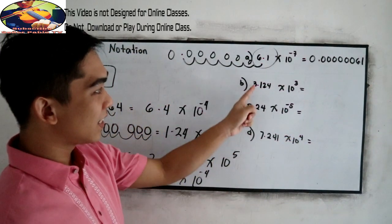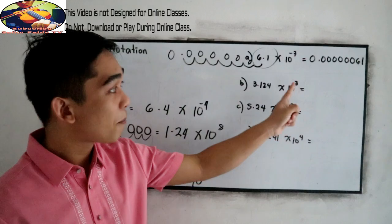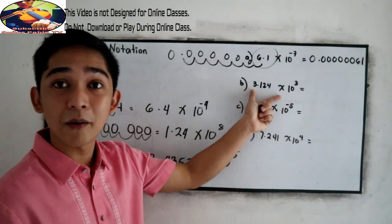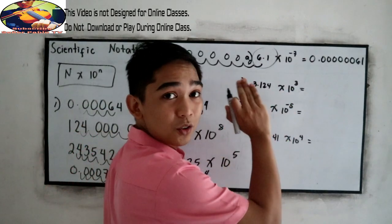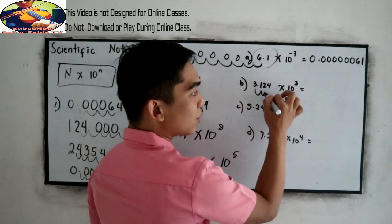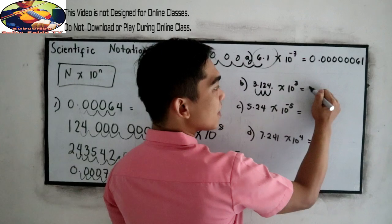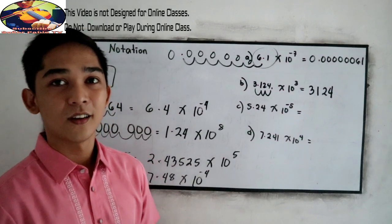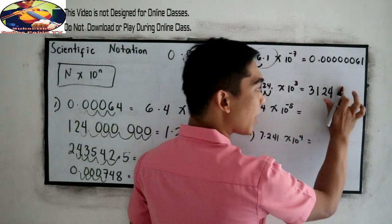Next, 3.124 times 10 raised to 3. Positive 3 means that when writing in decimal form, this will give us a large value. So we move our decimal point to the right 3 times: 1, 2, 3. Our decimal will be here, giving us 3,124. It is understood that our decimal point is at the end, so it's okay not to write it.